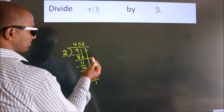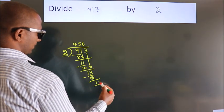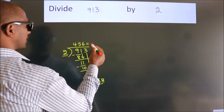After this, no more numbers to bring down. So we stop here. This is our remainder. This is our quotient.